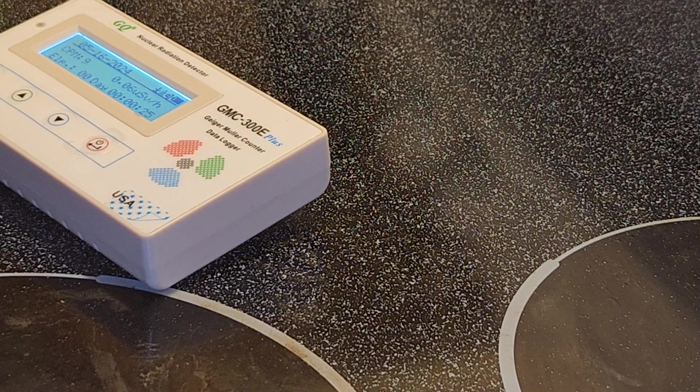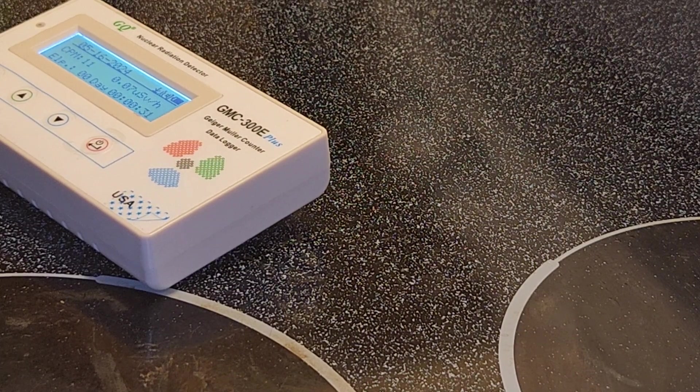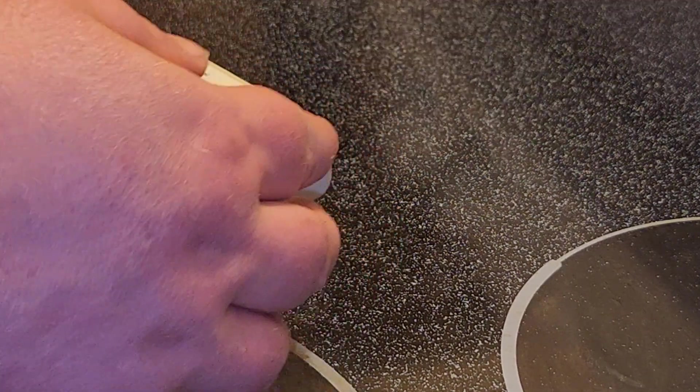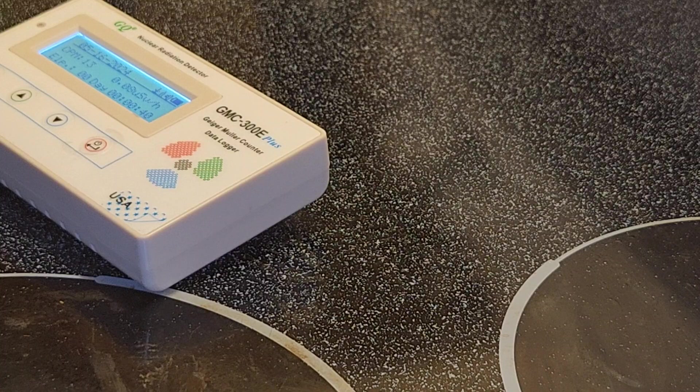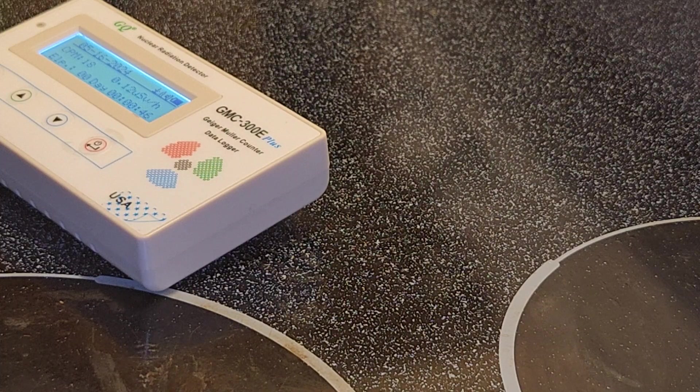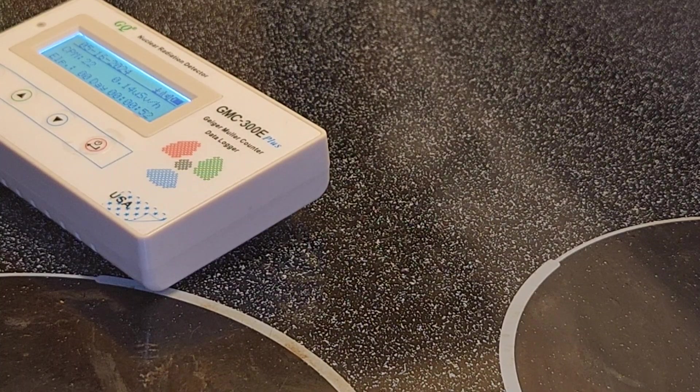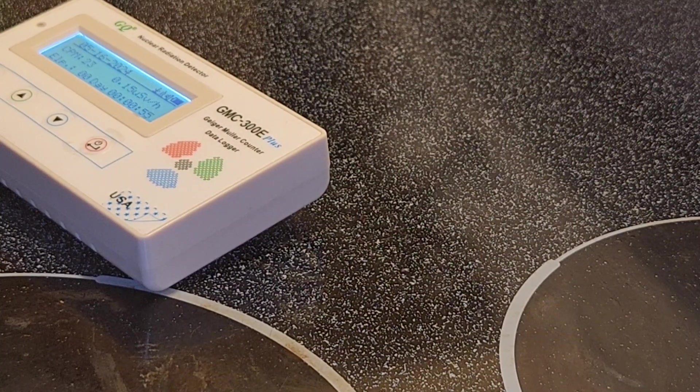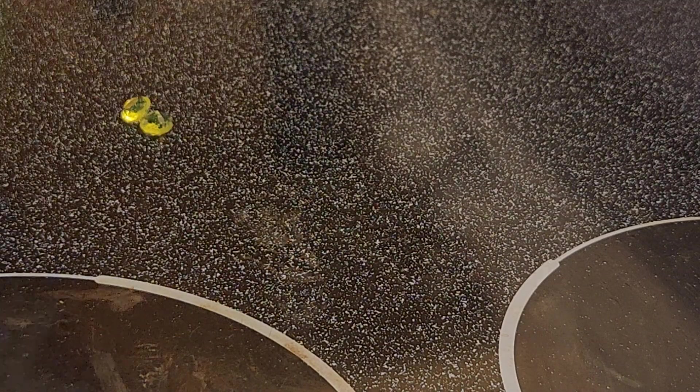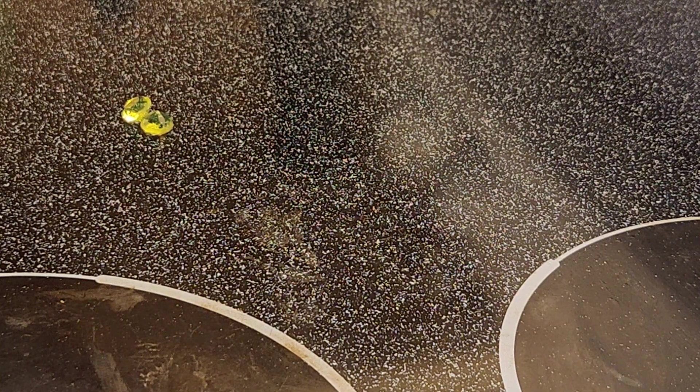Last time I got 24-25 counts per minute for the Vaseline glass. Right now at 40 seconds it's reading 15-20. Maybe I didn't have it properly aligned. At 44 seconds, it's 20-23 counts per minute. About 24-25 counts per minute, so half the amount of gamma ray.